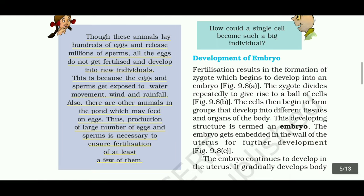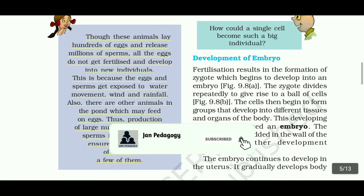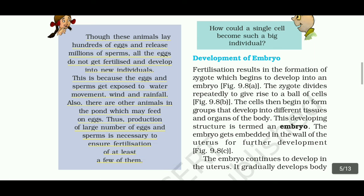Although animals release hundreds of eggs and millions of sperms, all the eggs do not get fertilized and develop into new individuals. This is because the eggs and sperms get exposed to water movement, wind, and rainfall. Also, there are some other animals in the pond which may feed on eggs. Thus, reproduction of large numbers of eggs and sperms is necessary to ensure fertilization of at least a few of them.